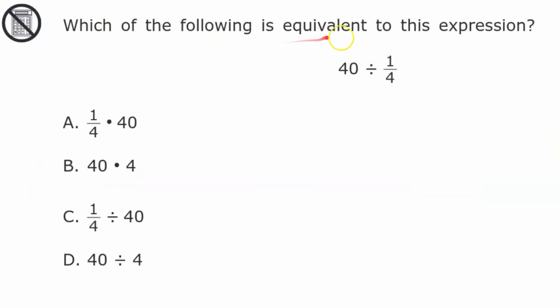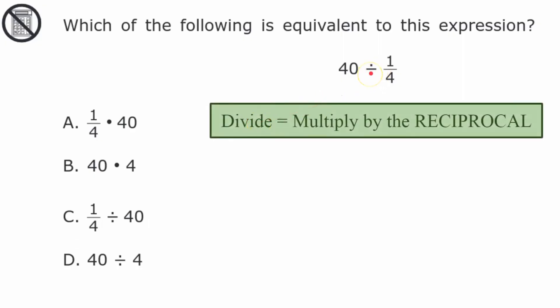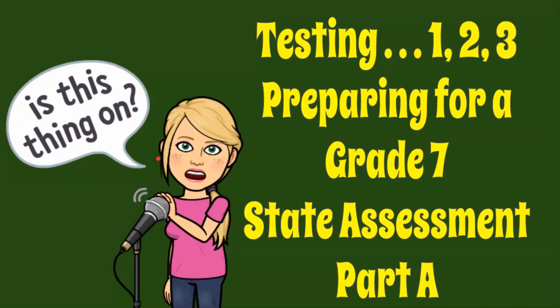Next question. Which of the following is equivalent to this expression? 40 divided by 1 fourth. Go ahead and pause now and come back when you're ready. Welcome back. What I did was I know that this is dividing which means multiply by the reciprocal or you may have heard keep, change, flip. So I'm going to rewrite this to multiply by the reciprocal which is 4. So the expression that is the same is b, 40 times 4.